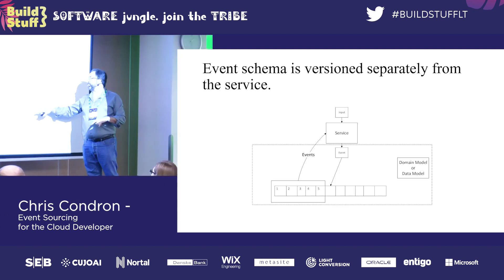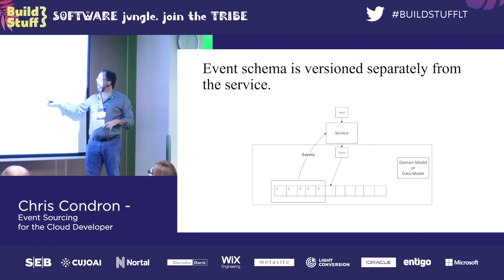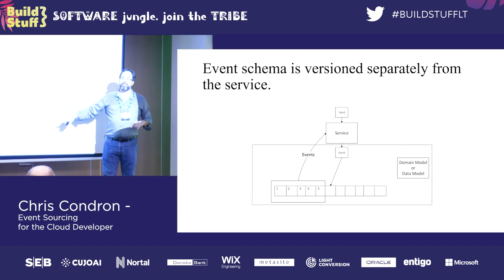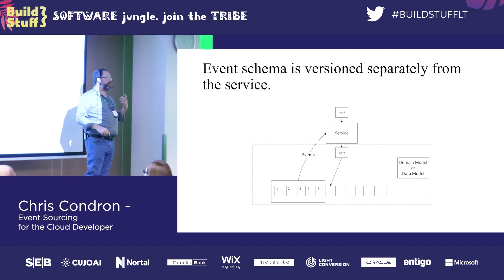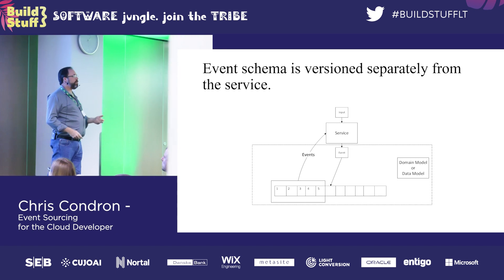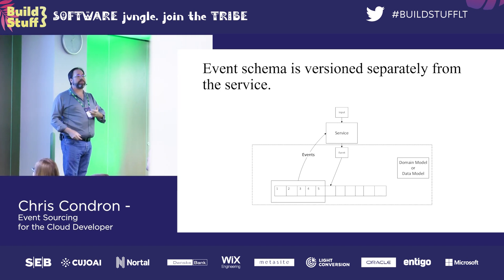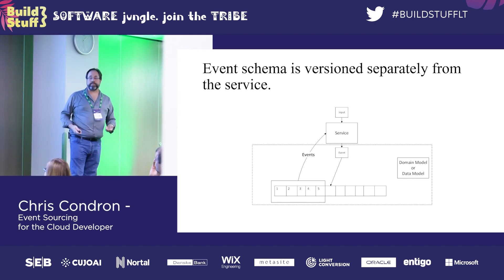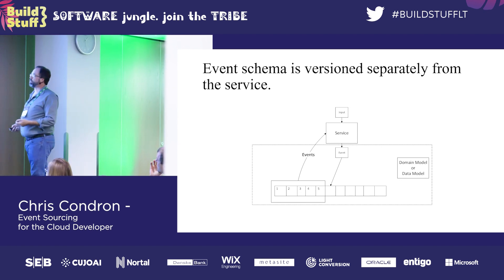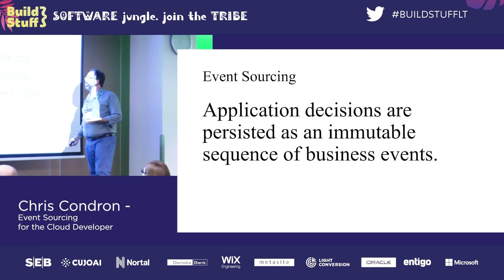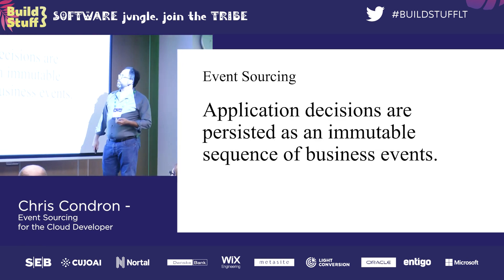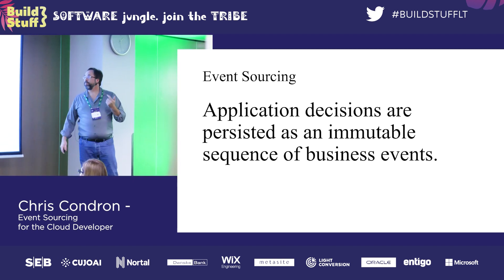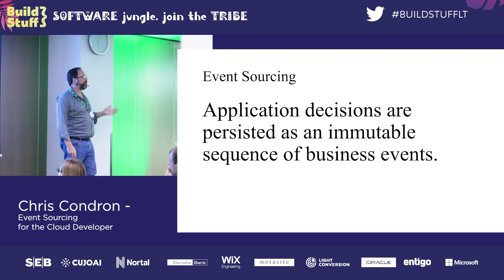To repeat: the domain model or data model is what you version the event with. Your services need to be able to be versioned separately. You want to be able to release code at a faster rate or a different rate than what you want to change your data schema. Application decisions are persisted as an immutable sequence of business events.